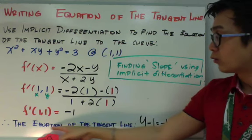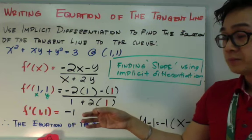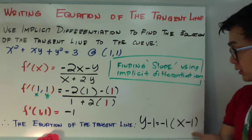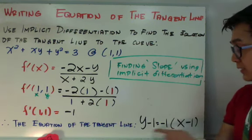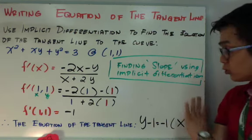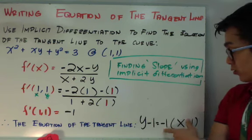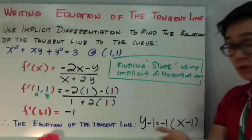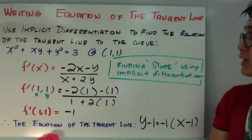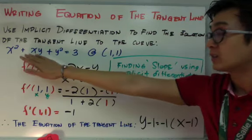Ang pag-sulat nung equation ng tangent line using the point-slope form, which is y minus y₁ equals m times (x minus x₁). Ito yung equation na ito. So yung equation ng tangent line natin is y minus 1 equals negative 1 times (x minus 1). Kung gusto nyo pa siyang i-further simplify, pwede nyo siyang gawing slope-intercept form. Distribute nyo ito, add 1 on both sides. So y is equal to mx + b. Ganito yung pag-sulat nung equation ng tangent line kung gagamitan natin ng implicit differentiation.